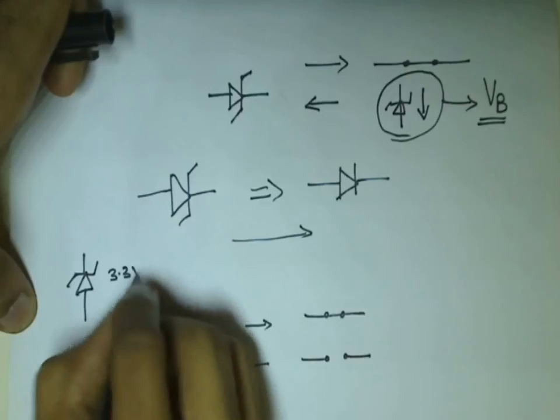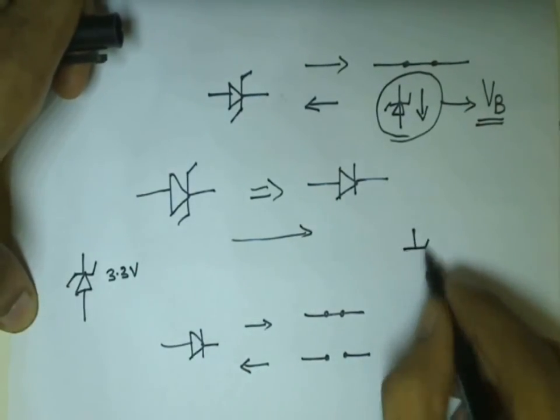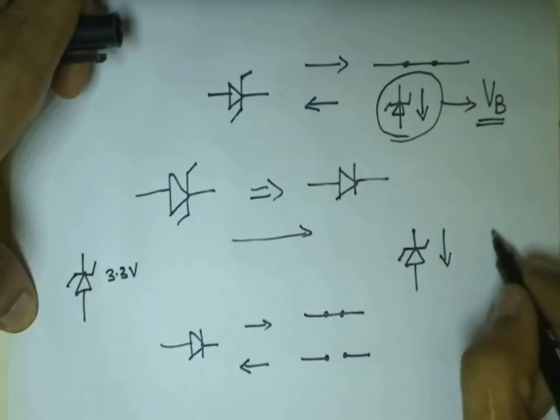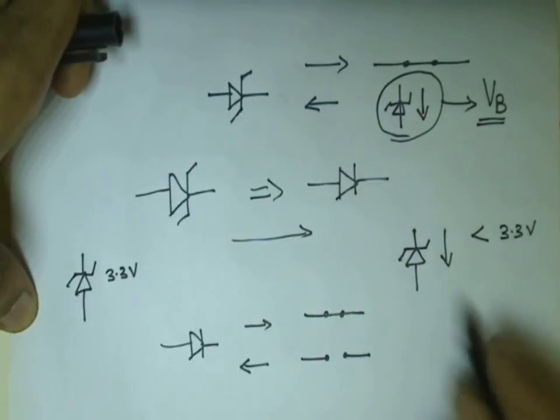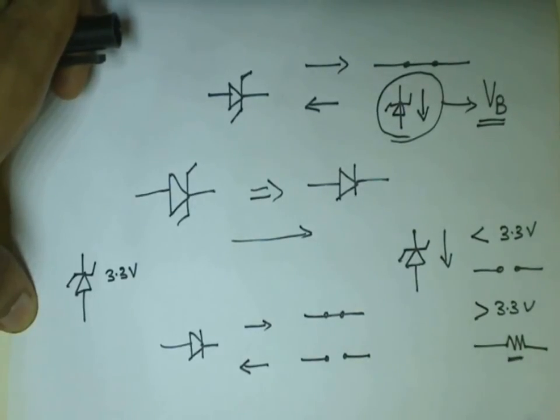Consider a Zener diode rated at 3.3 volts. That means when the reverse bias voltage across the Zener diode is less than 3.3 volts, it acts as an open circuit. And when the voltage is greater than 3.3 volts, the Zener diode acts as a resistor and starts conducting in reverse bias condition.